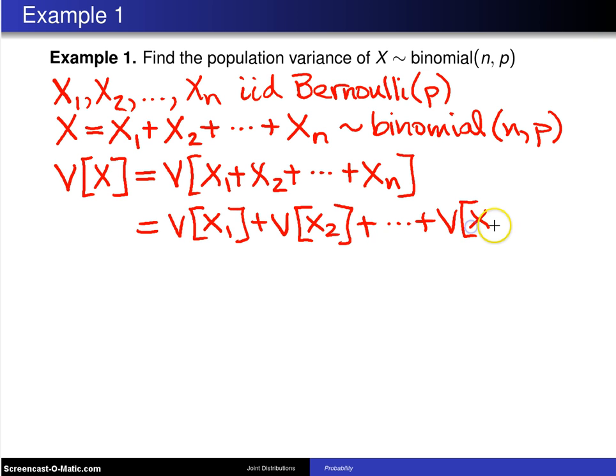And you know that the variance of a Bernoulli random variable is P times 1 minus P. So that is simply getting added up N times.